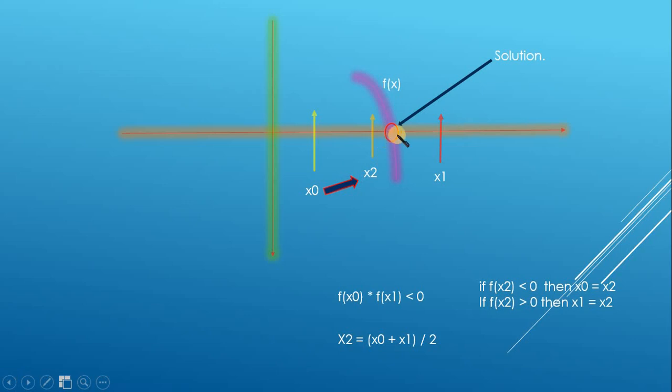Like here, the solution lies on the right side of this middle point. So then we are going to change this x0 from here to here. And then again we are going to do the same thing until we come to this point.